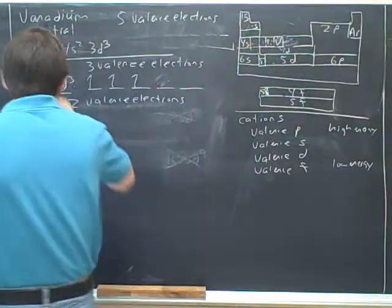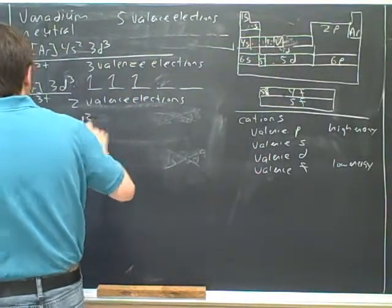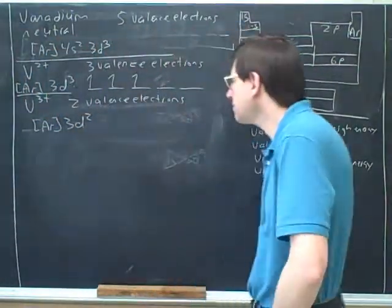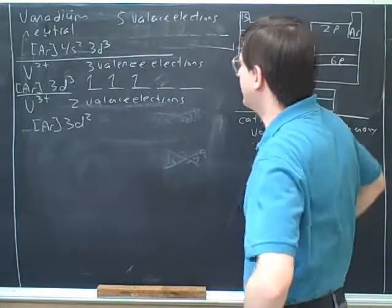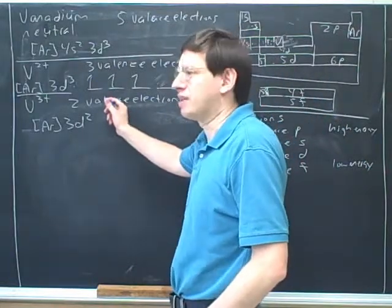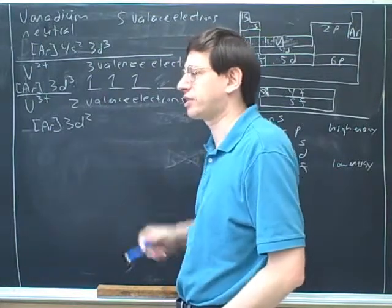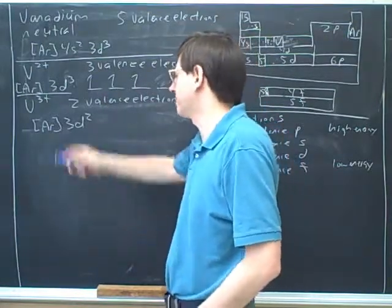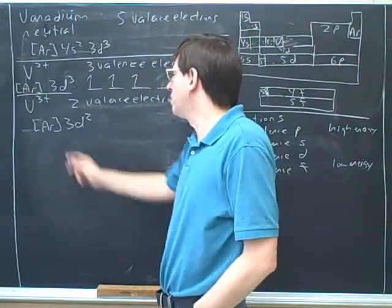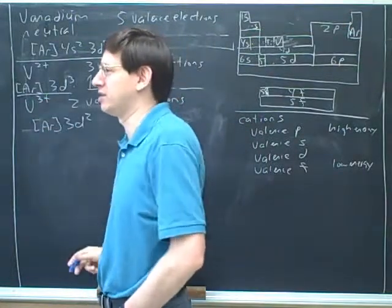Vanadium 3 plus still has two valence electrons. Again, we don't put them in the s block, we put them in the d block. The key is to write down how many valence electrons there are. That'll be important for some other stuff in chapter 2. Let's get in the habit of writing down the number of valence electrons.